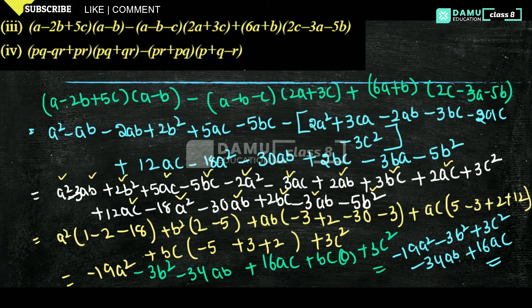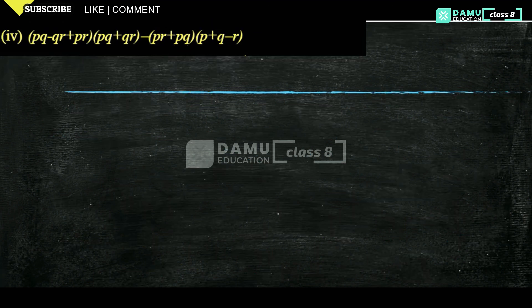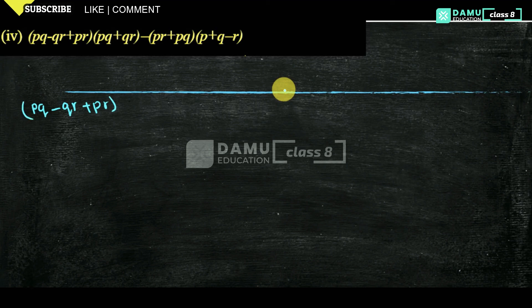Thanks for watching. Please subscribe. Hello viewers. In this module we are going to discuss the fourth one. We are continuing from the last video. So that is what they are given here: PQ minus QR plus PR into PQ plus QR minus PR, plus PQ into P plus Q minus R.